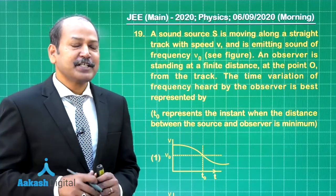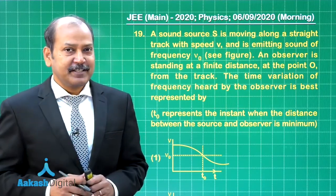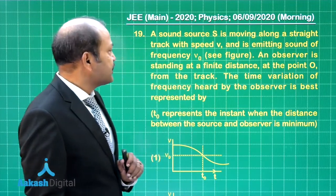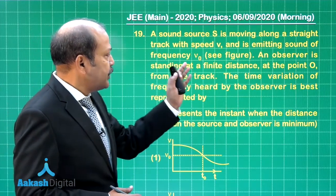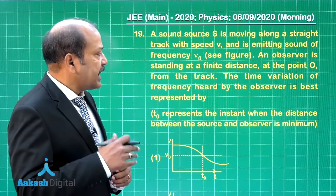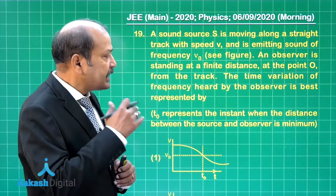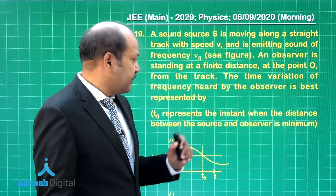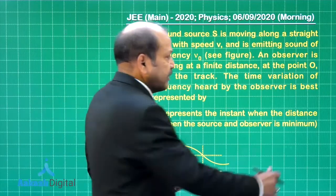Question 19 is on the topic sound waves and specifically it is on Doppler effect. Let us go through the question. It says a sound source is moving along a straight track with speed V and is emitting sound of frequency nu naught. An observer is standing at a finite distance at the point O from the track. The time variation of frequency heard by the observer is best represented by. T naught represents the instant when the distance between the source and observer is minimum and the four graphs are given.